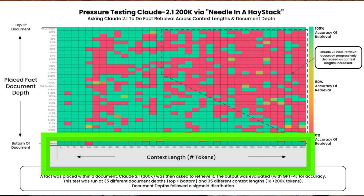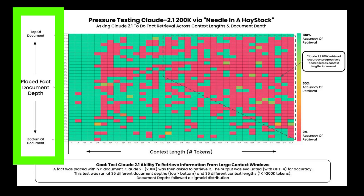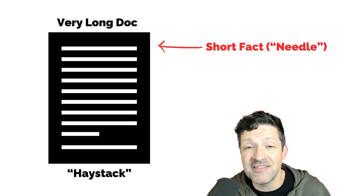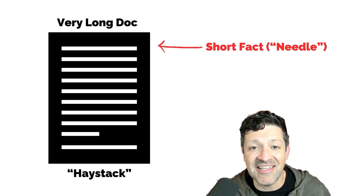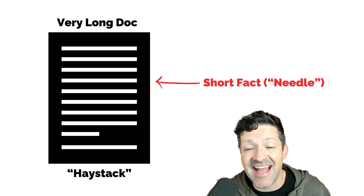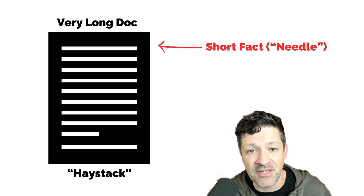His results include these incredibly useful charts detailing the reliability of these new context windows. Along the bottom X-axis, we see the context length in tokens, and on the left Y-axis, we see where in the context window the test fact appears. This test fact is his needle in a haystack of other information.